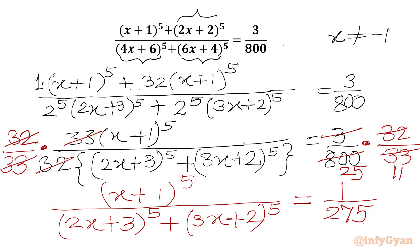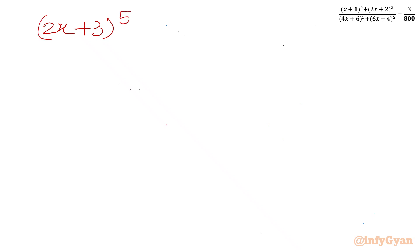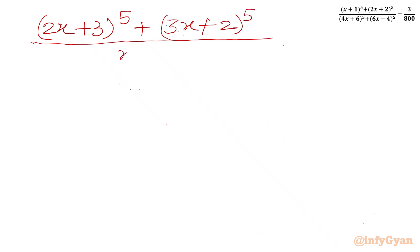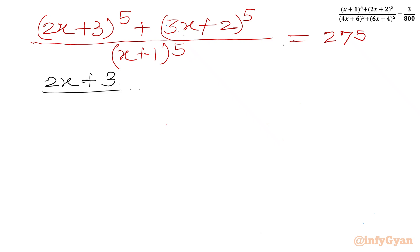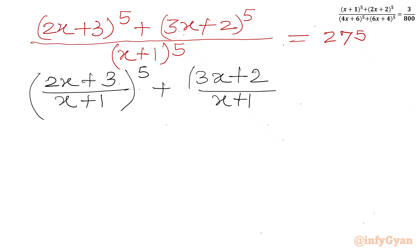Let me write this equation here. But before that I will switch numerator and denominator from both sides. So I can write our equation as: (2x+3) whole power 5 plus (3x+2) whole power 5 over (x+1) whole power 5, equal to 275. Now I will split the numerator with respect to the denominator. So I can write (2x+3) over (x+1) whole power 5 plus (3x+2) over (x+1) whole power 5 equals 275.